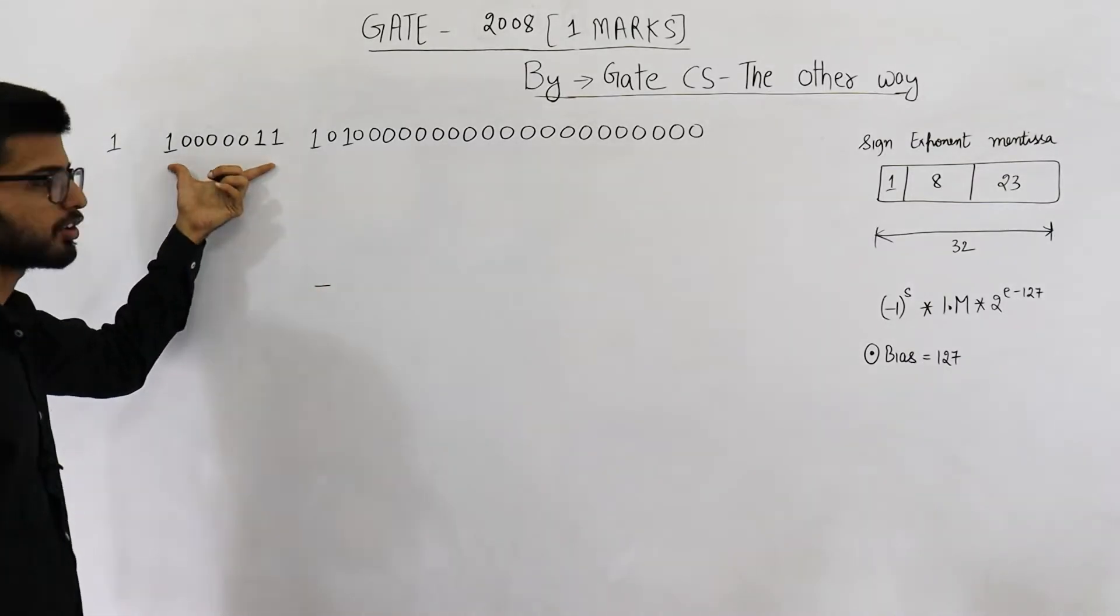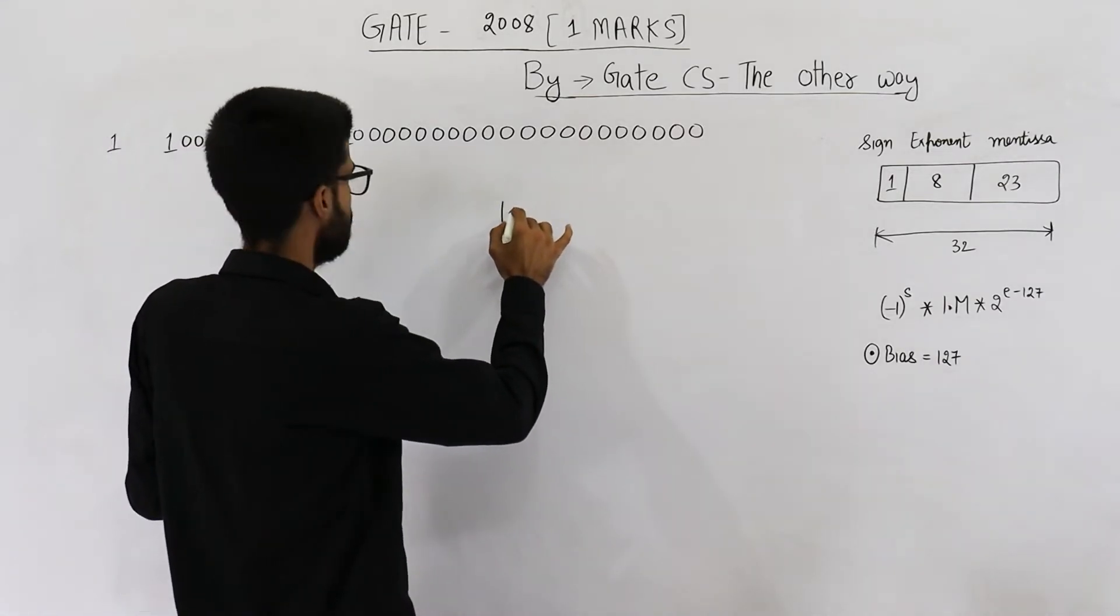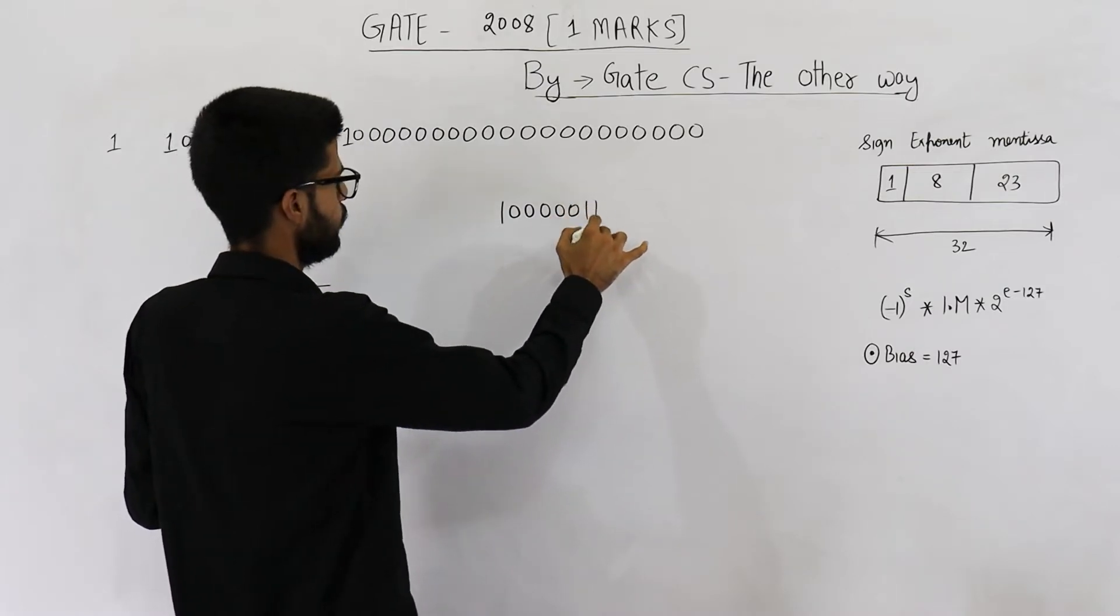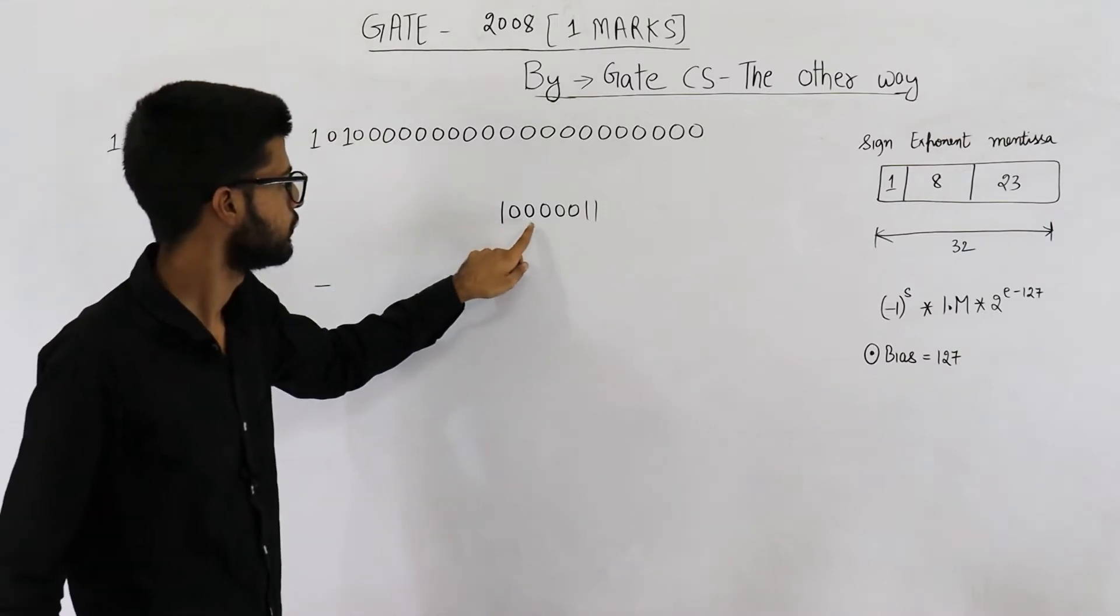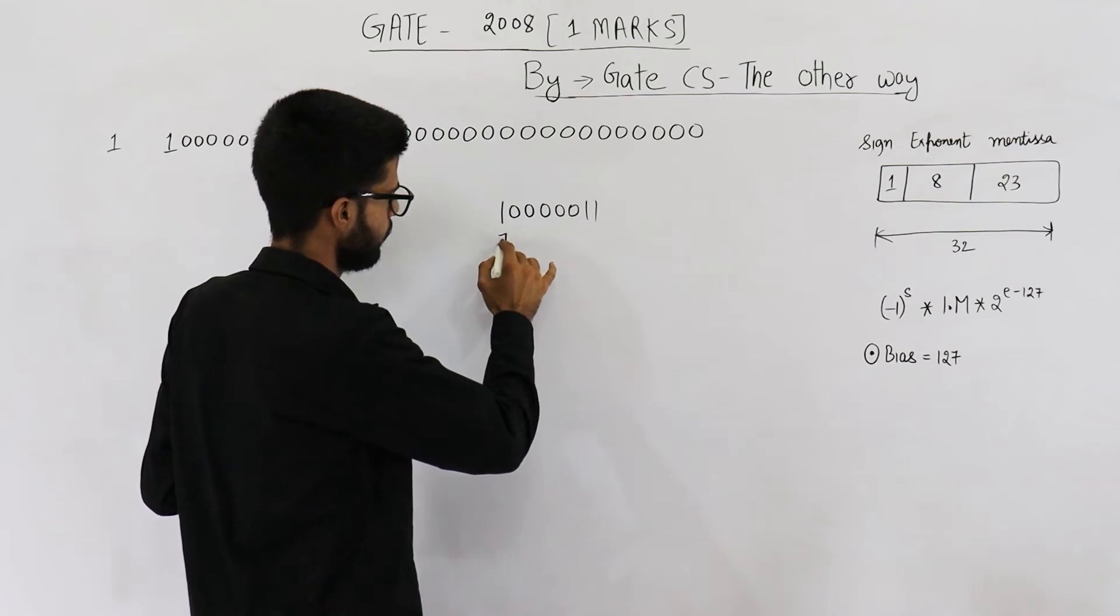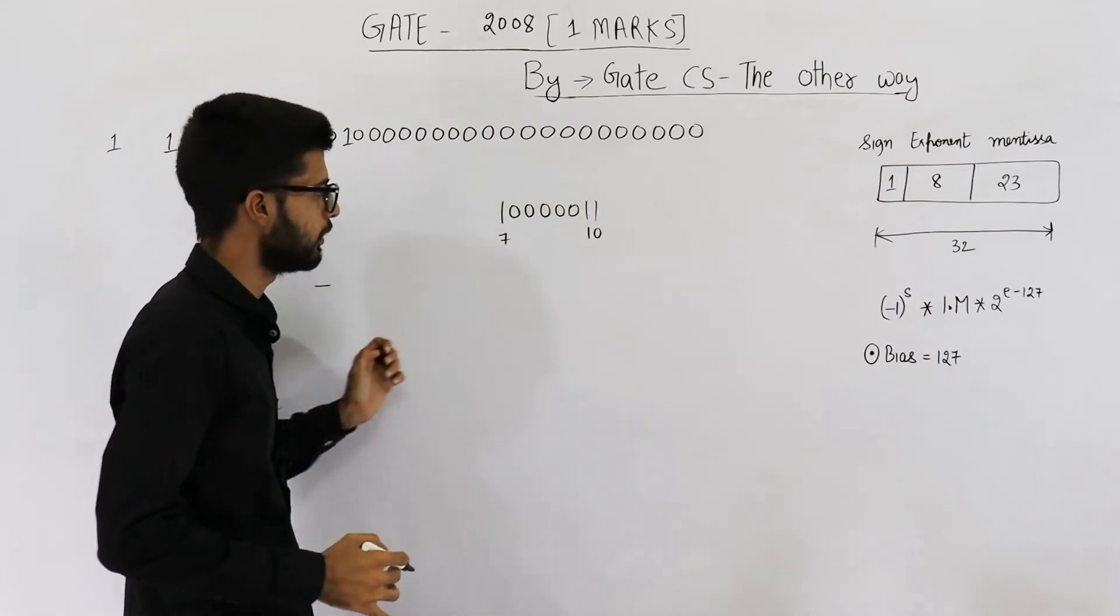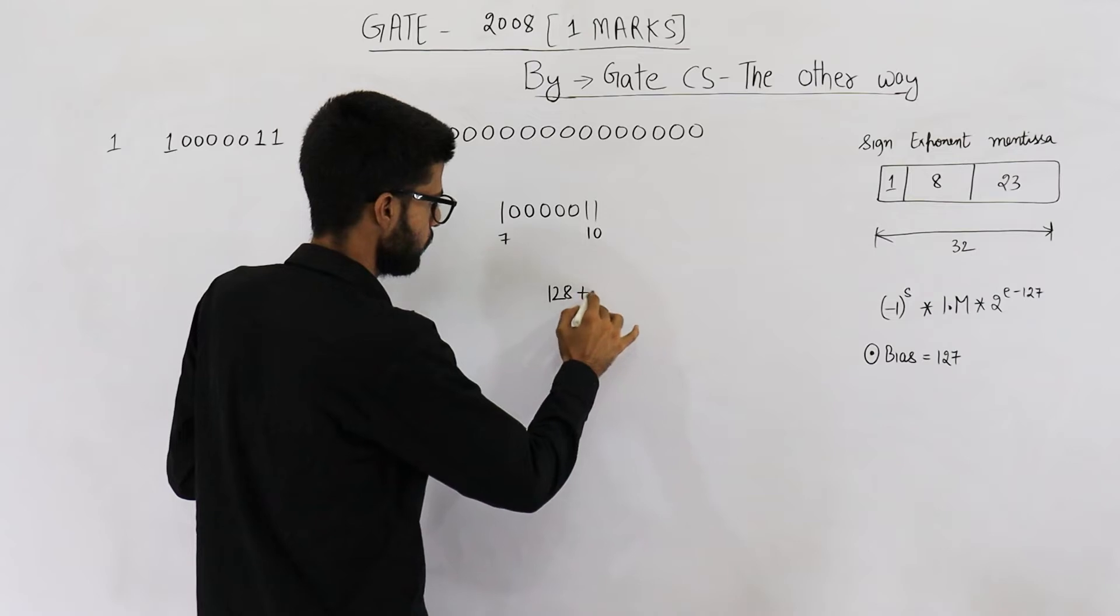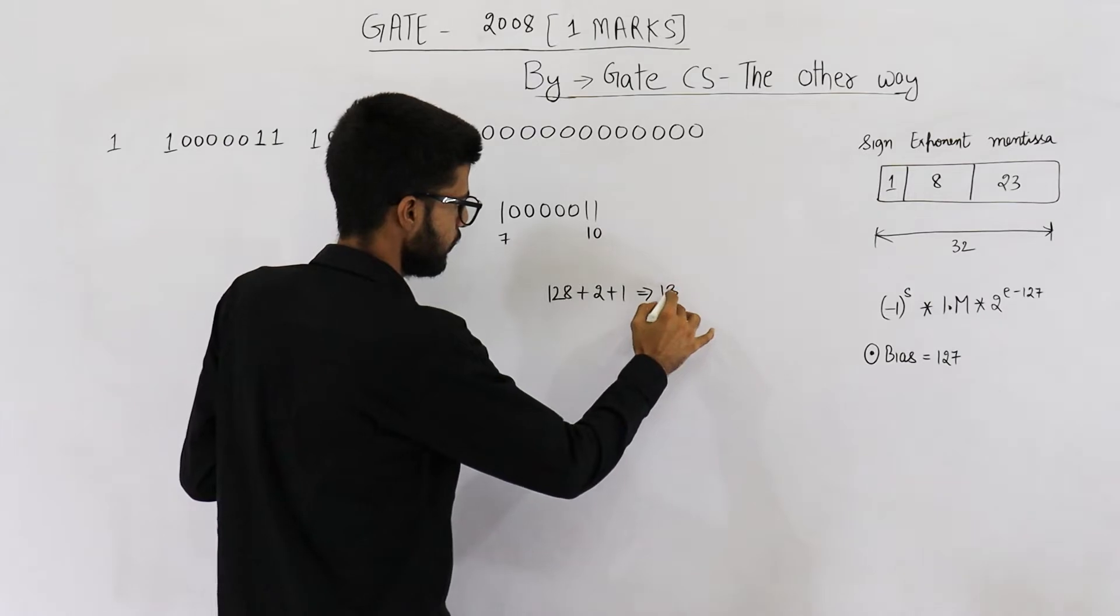And this is the exponent. So exponent is 1, 0, 0, 0, 0, 0, 1, 1. So this is 2 raised to the power 7. This is 2 raised to the power 0. And this is 1. That means 128 plus 2 plus 1. So this value is 131.